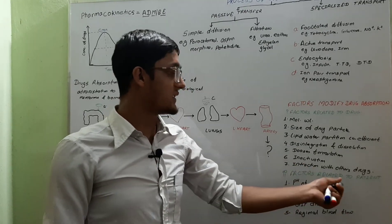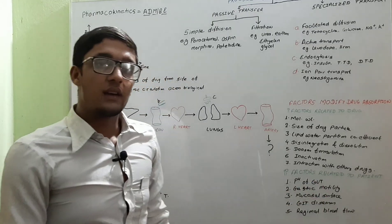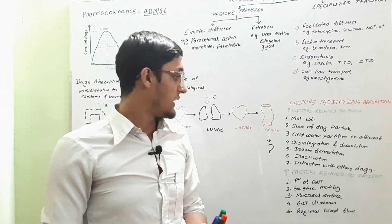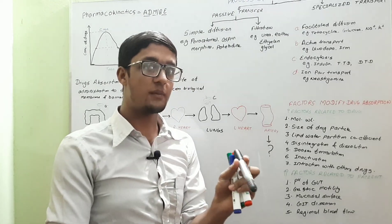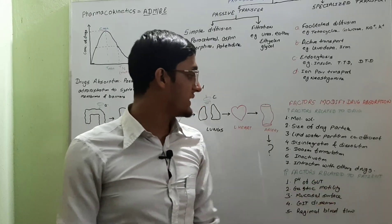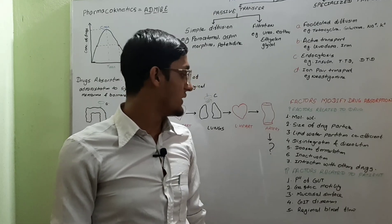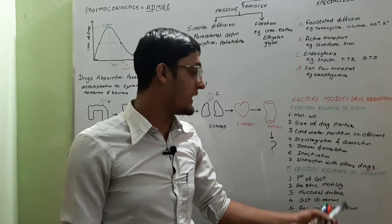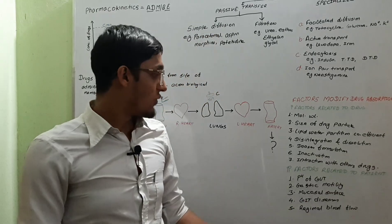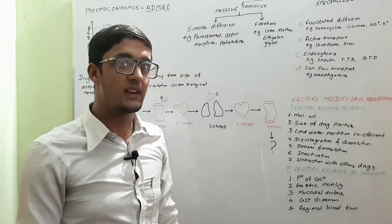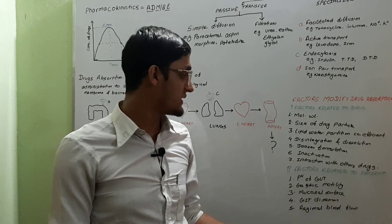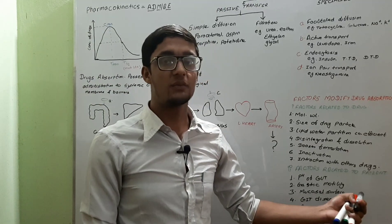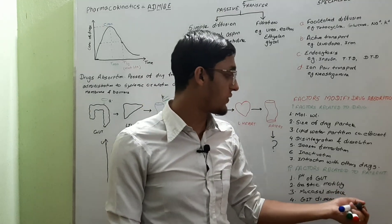Now, factors related to the patient: pH of the gut — if an acidic drug is given in an acidic medium, the rate of absorption will be rapid, and vice versa. Gastric motility — with increasing gastric motility, the rate of absorption decreases. Mucosal surface — with increasing mucosal surface, absorption increases. GIT disease — in conditions like cardiac liver disease, absorption decreases, whereas in Crohn's disease, absorption increases. Regional blood flow — with increasing blood flow to an area, the rate of absorption is high; with low blood flow, absorption is low.